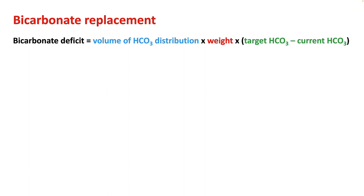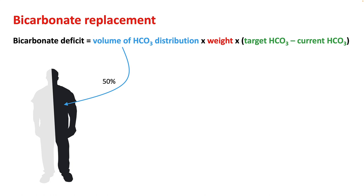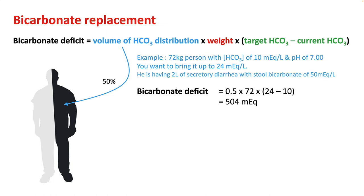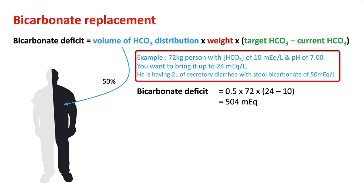If you are thinking about bicarb replacement, know the bicarb deficit. The volume of bicarb distribution is around 50%, as most of the bicarb is present in extracellular fluid. If you multiply this by weight and the change in bicarb you want to achieve, you should be able to get the bicarb deficit. For example, in a 72 kg person with a bicarb of 10, if you want to bring the bicarb up to 24, your bicarb deficit will be 0.5 × 72 × (24 − 10), which is 504 mEq.